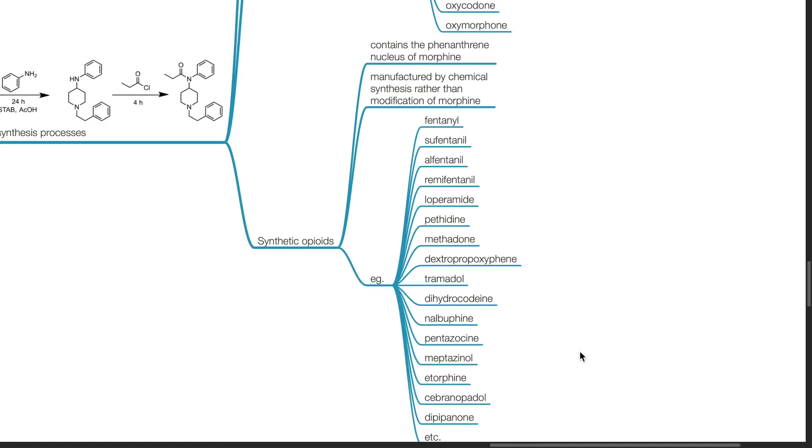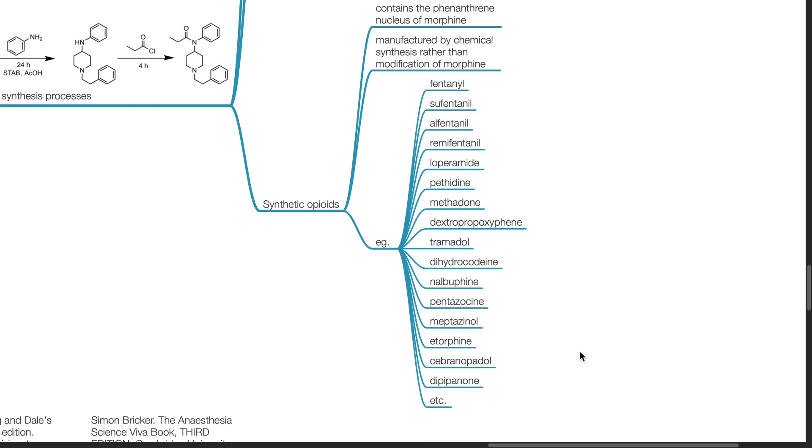Synthetic opioids contains the phenanthrene nucleus of morphine and is manufactured by chemical synthesis rather than modification of morphine. Examples of synthetic opioids include fentanyl, sufentanil, alfentanil, remifentanil, loperamide, pethidine, methadone, dextropropoxyphine, tramadol, dihydrocodeine, nalbuphine, pentazocine, meptazinol, etorphine, cebranopadol, dipipanone, etc.